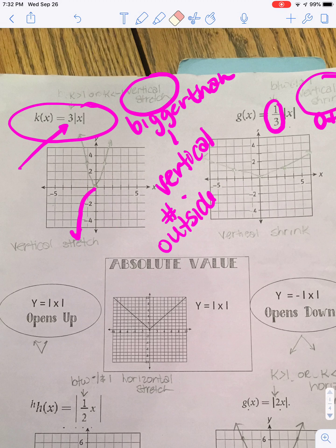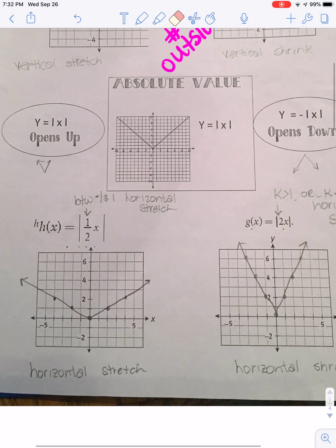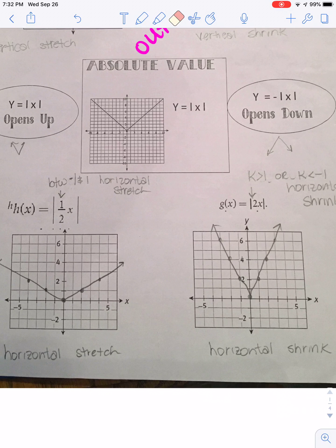So keep that in mind that that's what that negative part tells you. We did that it was horizontal, basically when the number was inside.